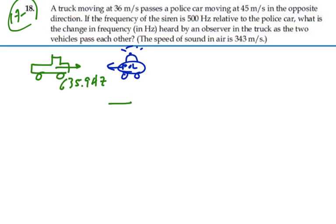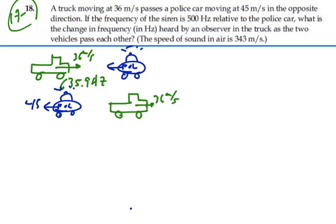And then in problem 17, we had that the truck had already passed the police car, still moving at 36 meters per second in either case. And the police car was past the truck, still putting out its frequency, moving at 45 meters per second. And in this case, when the two are moving in opposite directions and past each other, the observed frequency was 395.6 hertz.